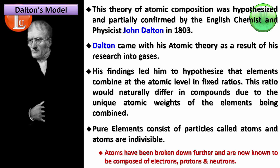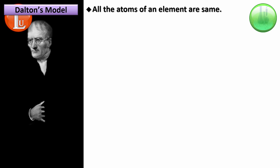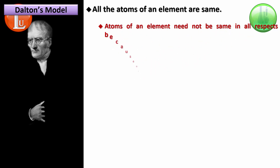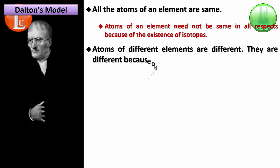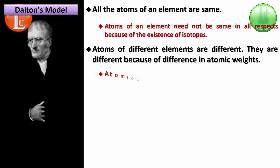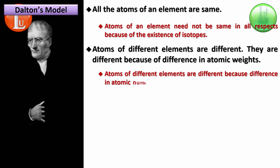The fact that Dalton proposed these ideas formed the backbone of future models. His postulate that all atoms of an element are the same was not true — we know isotopes exist, where the atomic number is the same but the mass is not. Atoms of different elements are different, and Dalton said their difference is because of their atomic weights. But today we know it is not atomic weight — even Mendeleev believed atomic weights, but today we know it is atomic number that makes atoms differ from each other.